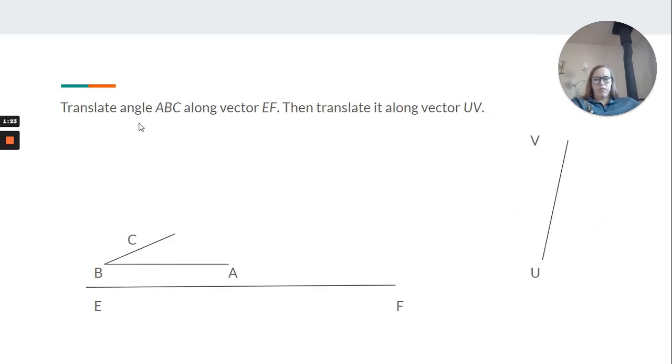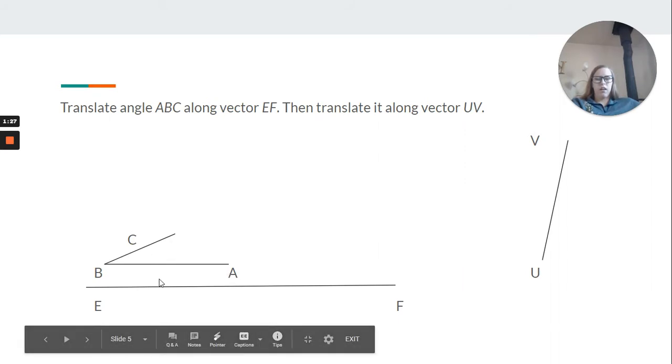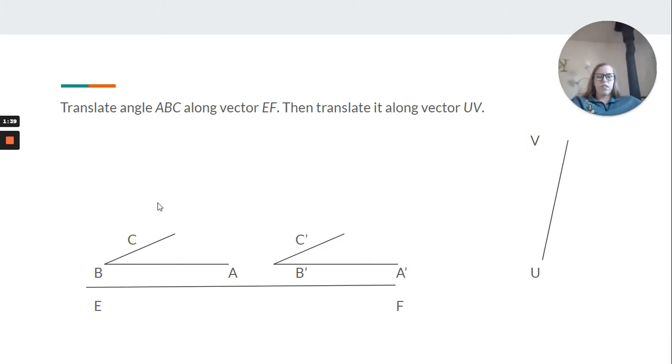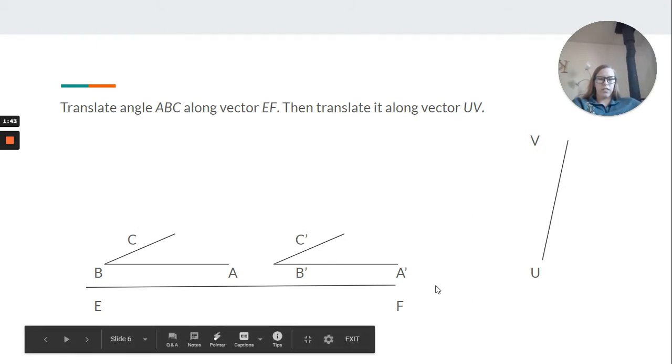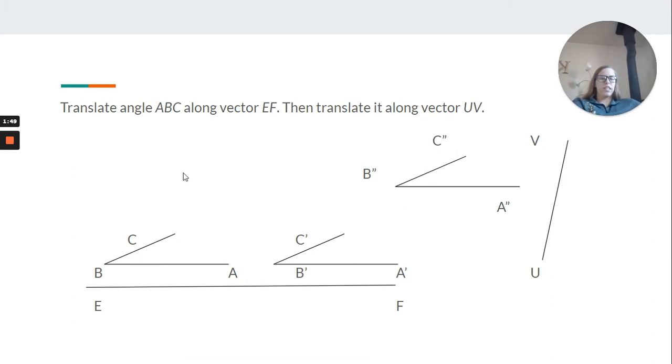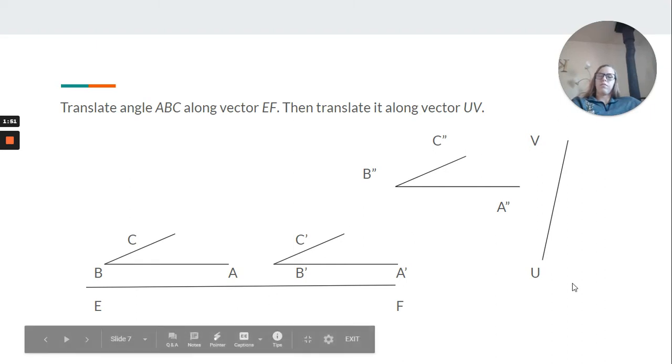Let's try another one. Translate angle ABC along vector EF, then along vector UV. Notice these little hash marks. That's indicating it's not the original. We have one hash mark for the first translation, and then two hash marks here for our next translation, basically stating it's a copy.